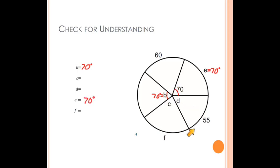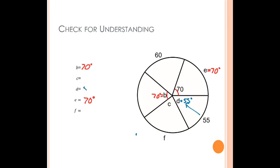Next, we're going to go in the opposite direction. Here we have an arc of 55 degrees, and we know that the measure of this arc will be the same as the measure of this central angle. Therefore, if that's 55, then this central angle will also be 55 degrees. And that is D, so D would be 55.